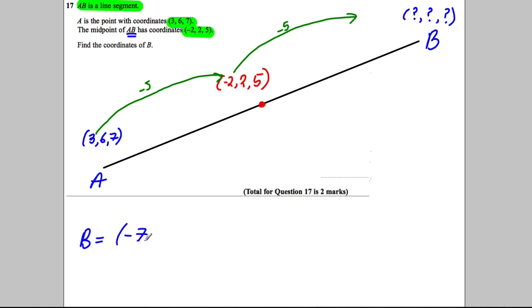Right, so now let's think what happened to the 6. How did you get from 6 to the 2? Well, you took away 4. So let's take away another 4 here, and 2 take away 4 is -2.